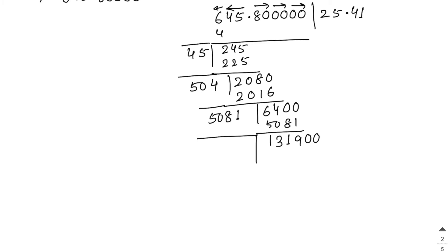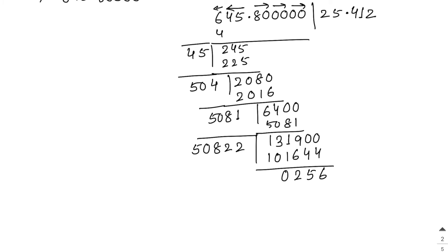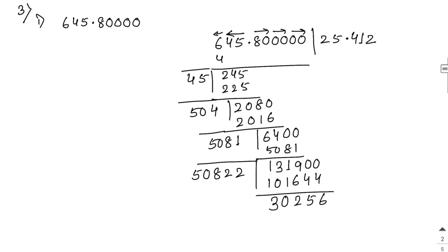After subtraction, remainder is 1319. Bring down the next 00. Double of 2541 is 5082. Try 50822×2: that gives a further digit. Since we only need 2 decimal places, we stop. The square root of 645.8 correct to 2 decimal places equals 25.41.